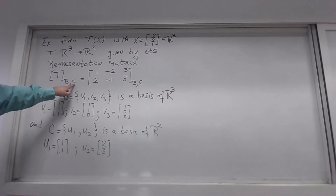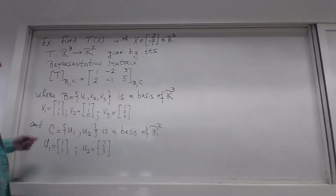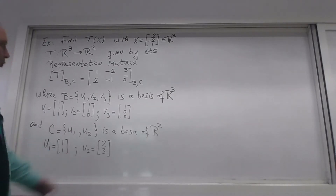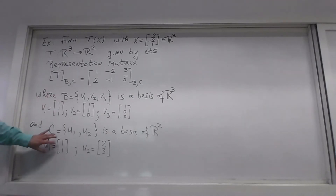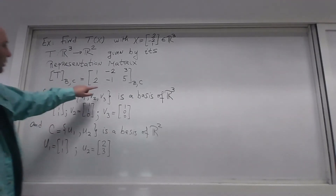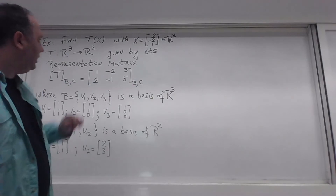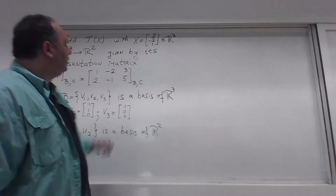T is only described by its representation matrix relative to basis B for R3 and basis C for R2. Basis B for R3 is given by three vectors v1, v2, v3, and basis C of R2 is given by vectors u1 and u2. We know basis B, basis C, and the representation matrix of our linear transformation relative to bases B and C — and that's all we know. We don't need to know the transformation itself — that's the point.